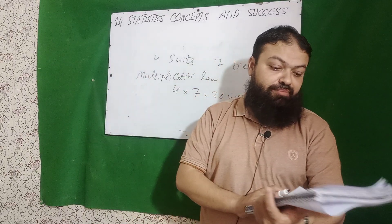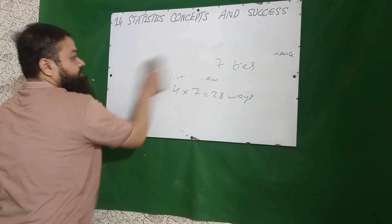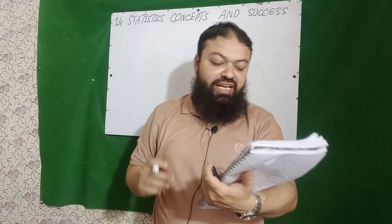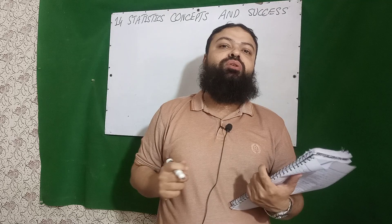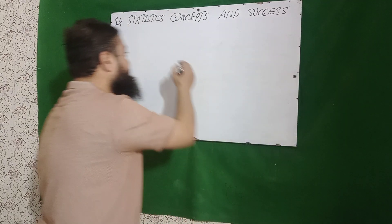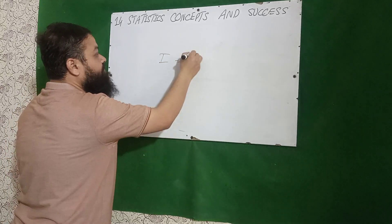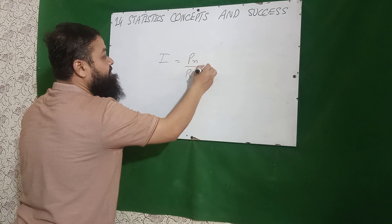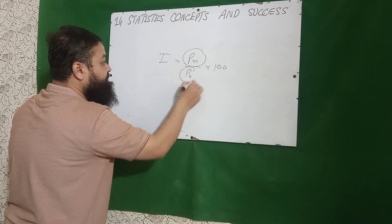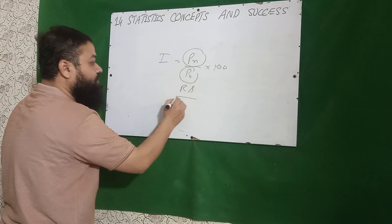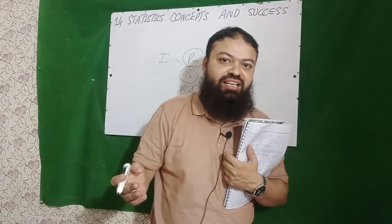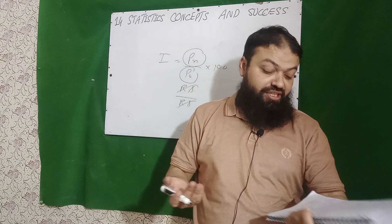Price relative is independent of unit of measurement. Index numbers are unit-less. We know the formula Pn over P0 multiplied by 100. For example, the price of the current year in rupees and the base year price also in rupees — these cancel out. So in index numbers, price relative is a unit-less measure.